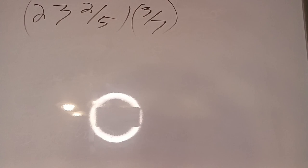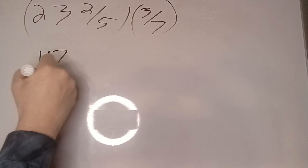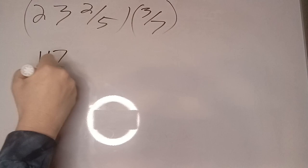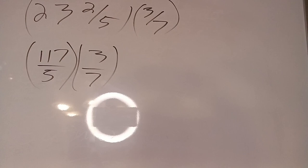That looks really ugly. If we're doing it the normal way we'd have to go 5 times 23 is 115 plus 2 is 117/5 times 3/7, and that's just horrible.